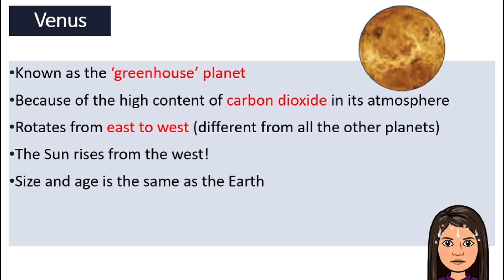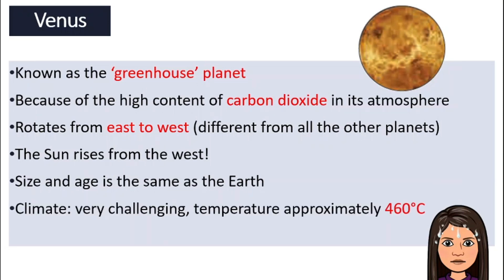The size and age of Venus is almost the same as the Earth. The climate here is very challenging. Because it is a greenhouse planet with a high content of carbon dioxide and a lot of greenhouse effect, the temperature here becomes very, very high — it skyrockets up to 460 degrees Celsius. It is a crazily hot planet.